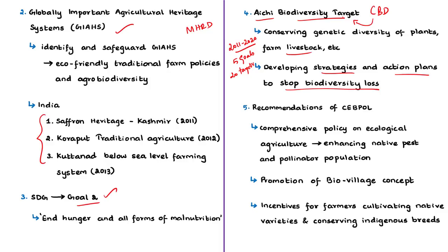Now come the recommendations by the Centre for Biodiversity Policy and Law — CEPPOL. The main aim of these recommendations is to increase India's agrobiodiversity. These include a comprehensive policy on ecological agriculture to enhance the native pest and pollinator population, which provide ecosystem services for the agricultural landscape. As a part of these recommendations, CEPPOL suggested the promotion of the bio-village concept of MS Swaminathan Research Foundation.